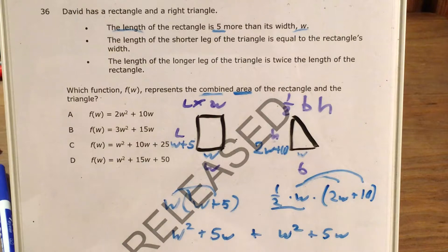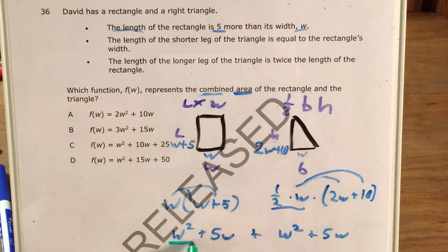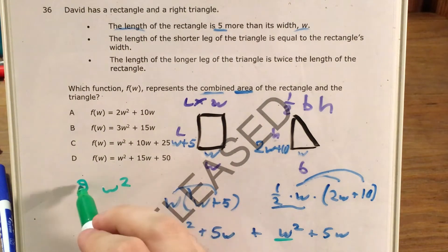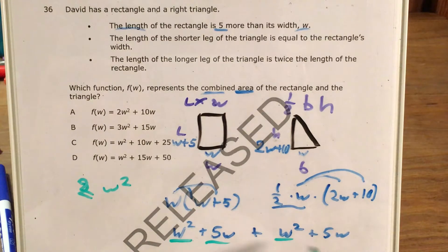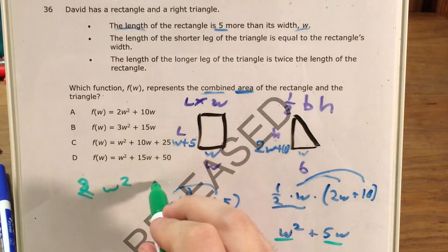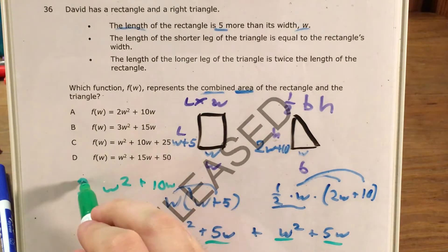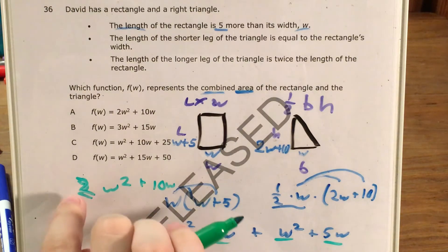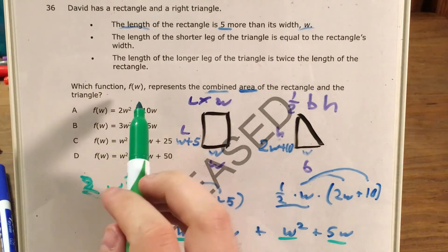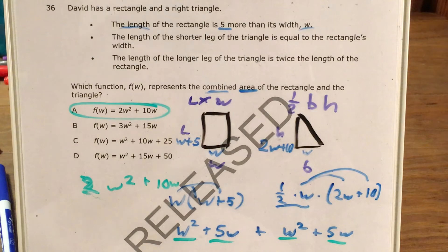So now I need to add these two expressions together. I will combine my like terms. One W squared plus one W squared equals 2W squared. And now 5W plus 5W equals 10W. So this is 2W squared plus 10W. I look at my answer choices and choice A matches that.